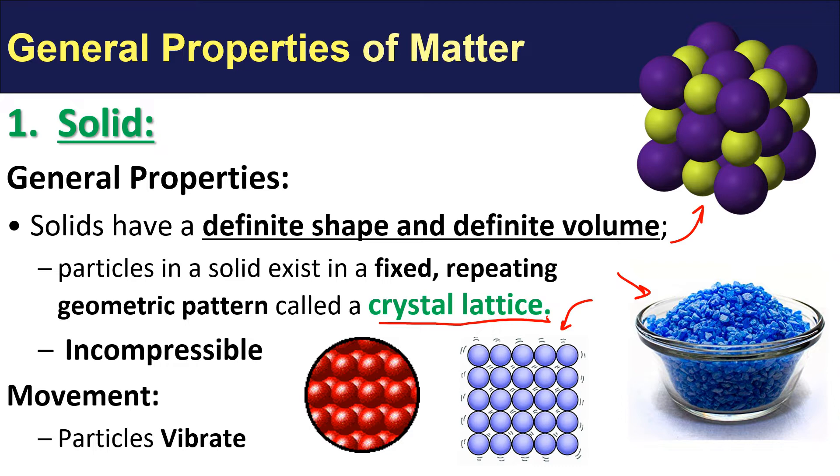The particles in a solid will always exist in a fixed, repeating geometric pattern, and that is our lattice. The arrangement is sometimes a little different, as you've seen with minerals in earth science, but nonetheless they will look pretty much like this. If we take a closer look, we're going to also see that there is very little space between the particles, and that accounts for the property that solids are generally incompressible, which means we cannot squeeze them together to take up less space or, in chemistry terms, volume.